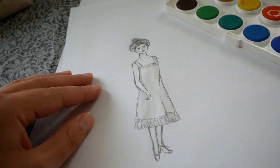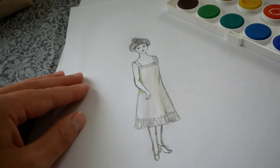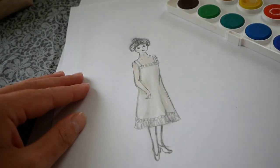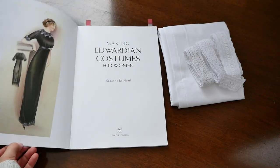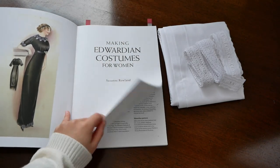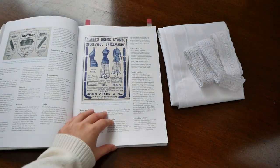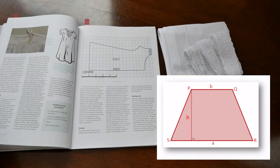On the internet you can find many variations of the chemise, and from observing many of those chemise and with the help of this book Making Edwardian Costumes for Women by Susan Rowan, which I highly recommend, I finally used this simple pattern of trapezoidal shape.